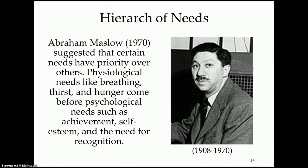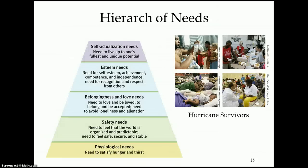Maslow comes into play again — you should remember him from the section on personality and the humanistic approach. Maslow came up with a hierarchy of needs, suggesting that certain needs have priority over others. Here is that hierarchy again. When we examine this hierarchy in terms of motivation, it can predict which needs we will be motivated to satisfy first. He predicted that we will act to satisfy our basic biological needs first like food and water, and then work our way up the pyramid depending on which level we're at.